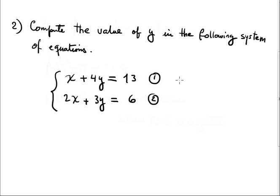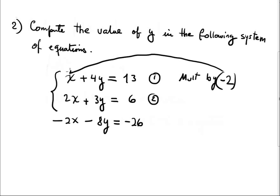Elimination, you multiply equation number 1 by negative 2. What is the intention? The intention is negative 2 times x is negative 2x. So now the new equation is negative 2x minus 8y equals negative 26. Because negative 2 times x is negative 2x, times 4 is negative 8, and times 13 is negative 26.